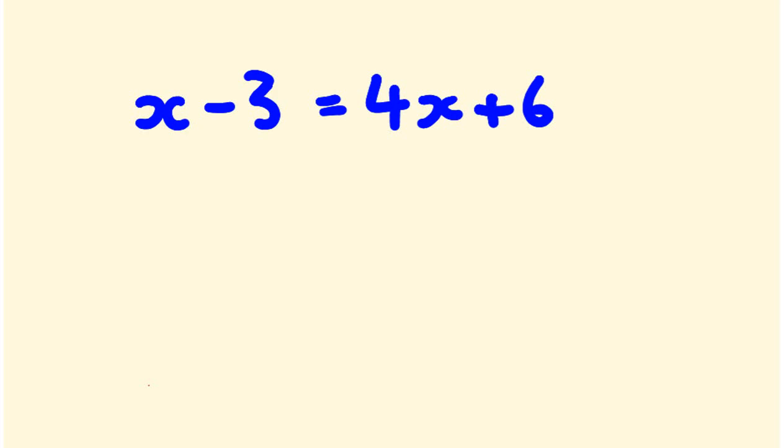So first off what we should do is we're going to get rid of this 4x here and I'm going to take it off this side. I'm going to get rid of this 3 here. Now you're going to see this is a minus 3, so I'm going to do the opposite of what it says. I'm going to add it to both sides, so I'm going to add it over here.